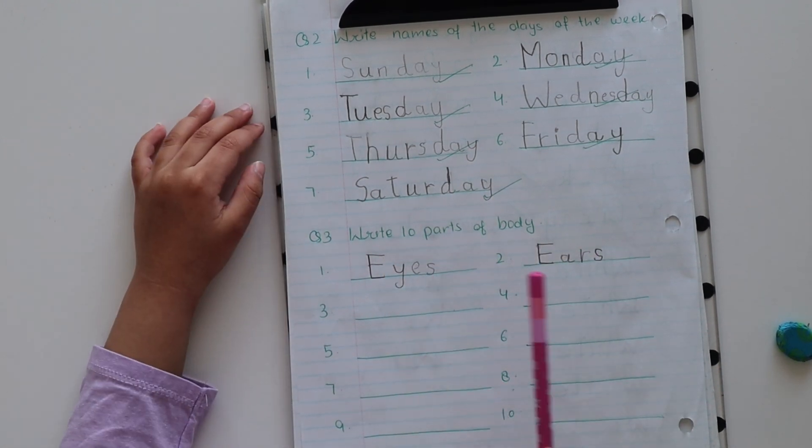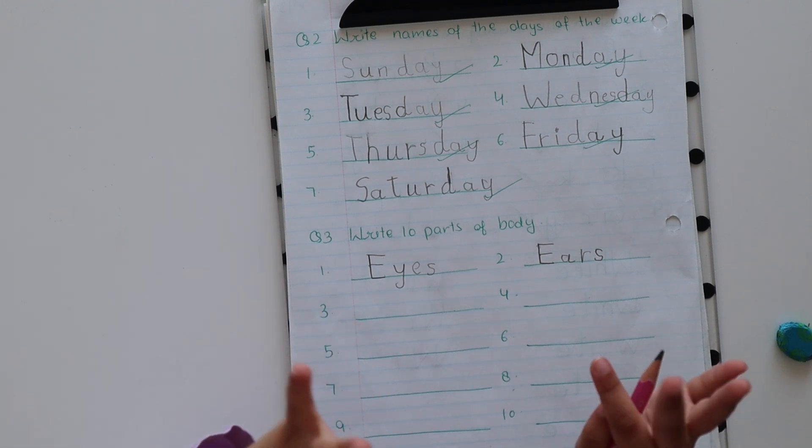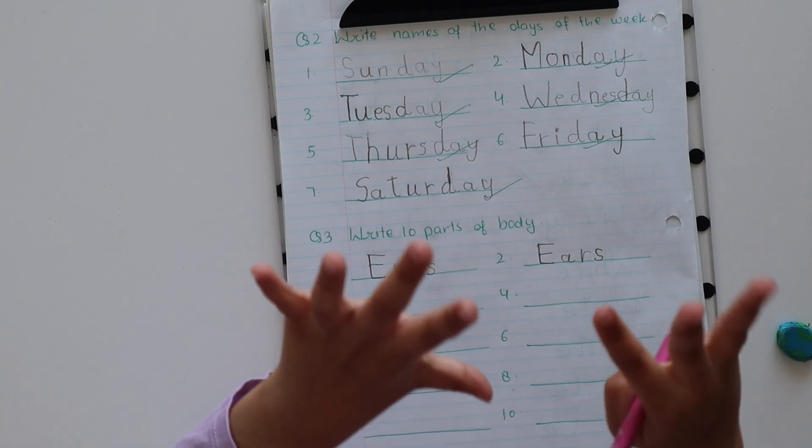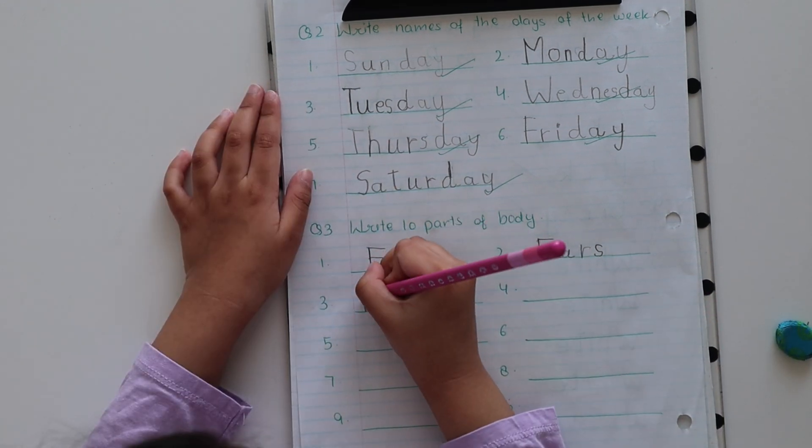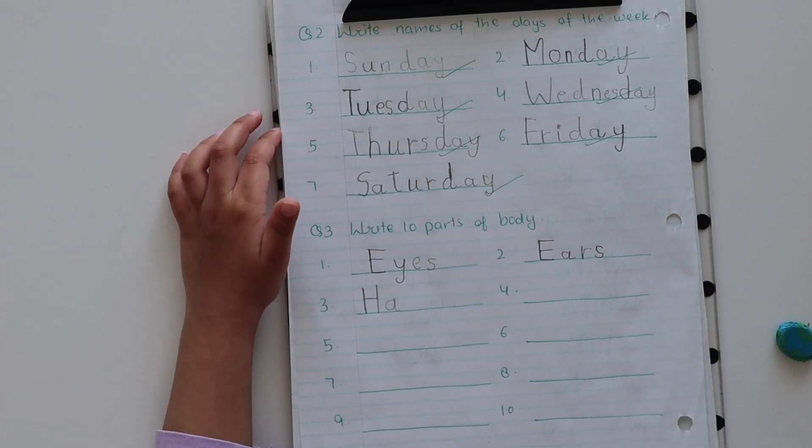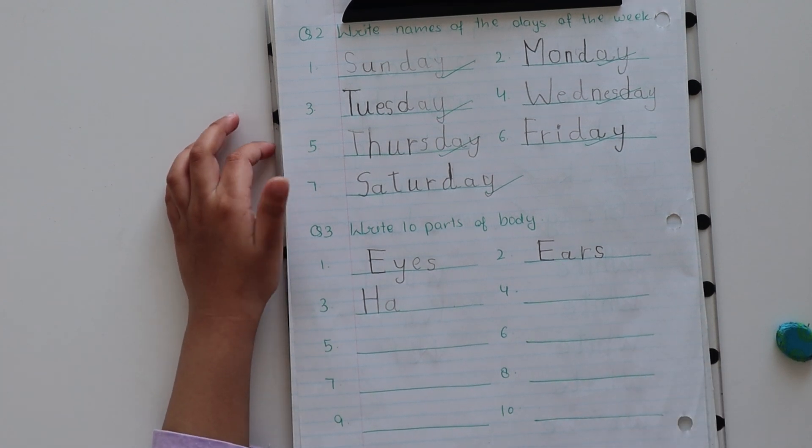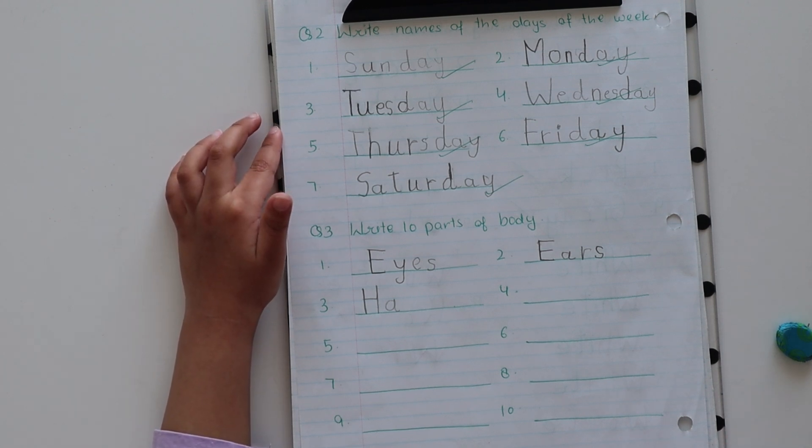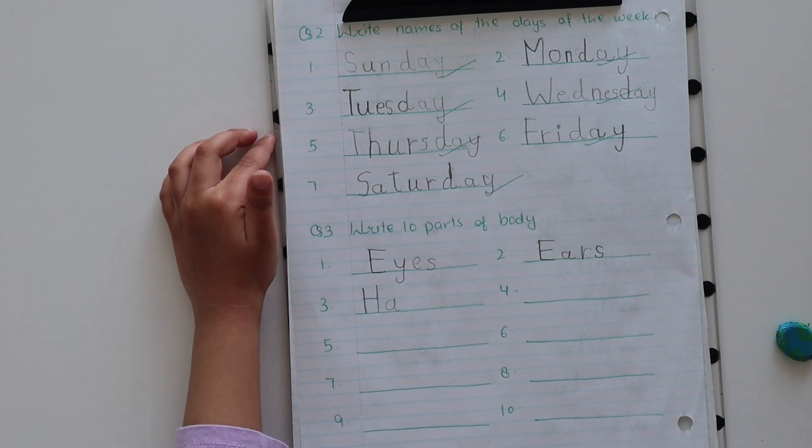We have two hands and we have five fingers on two hands. Hand is easy. You just need to put H and then you spell off and A-N-D. H-A-N-D. Hand.